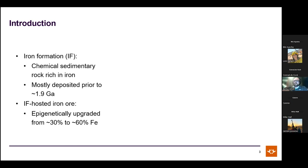Iron formations occur in almost any greenstone belt and are very abundant in early supracratonic marine successions. Iron formation-hosted iron ores form where an epigenetic post-depositional process upgrades iron content from approximately 30% to over 60%.